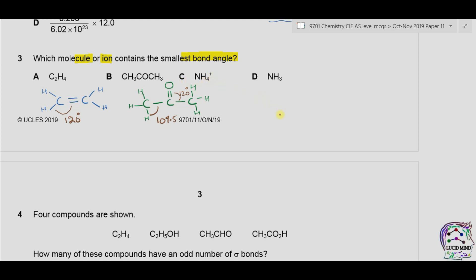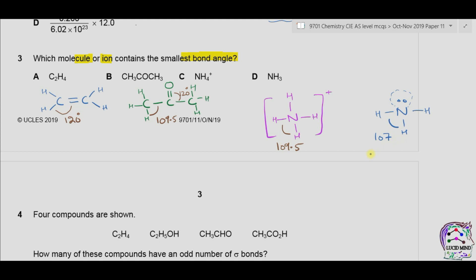Part C is NH4+. In NH4+ there are three single covalent bonds and one coordinate covalent bond. The structure is tetrahedral, so the bond angle is 109.5 degrees. Part D is ammonia — NH3 — which has three N-H bonds and one lone pair on nitrogen. The repulsion between the lone pair and the bond pairs reduces the bond angle from 109.5 to 107 degrees. So the compound with the smallest bond angle is ammonia, and the answer is D.